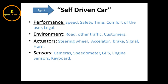The Environment for a self-driving car includes the road, other traffic, and customers. The Actuators include the steering wheel, accelerator, brake, signal, and horn. The Sensors include cameras, speedometer, GPS, engine sensors, and keyboard.